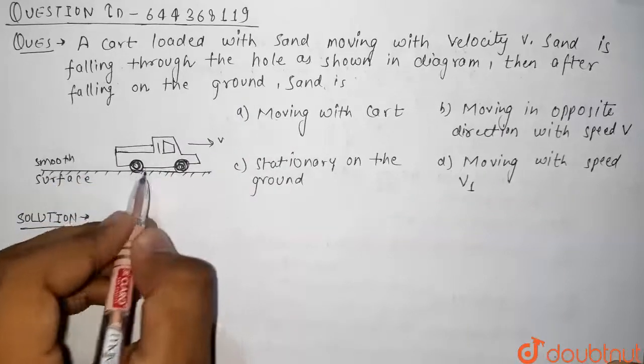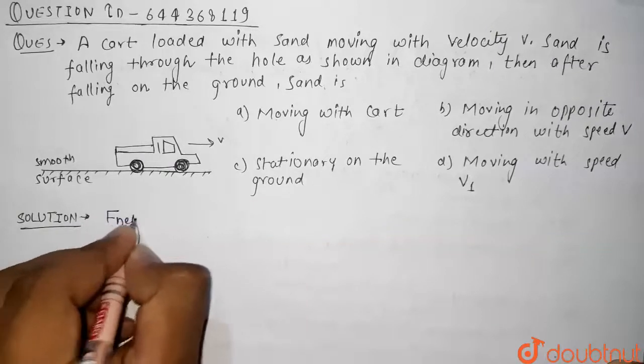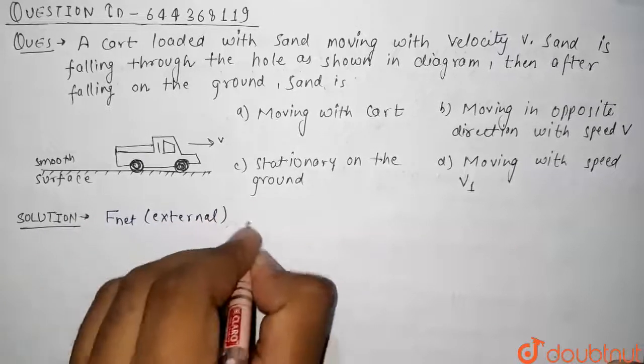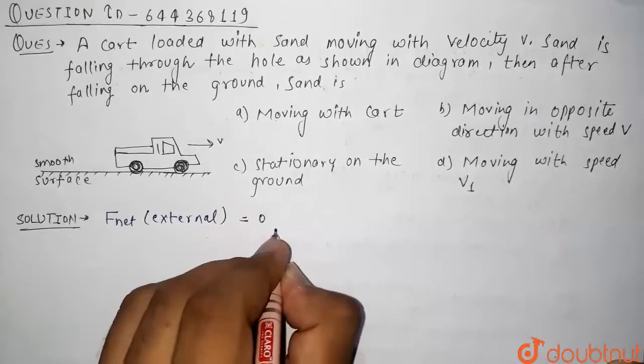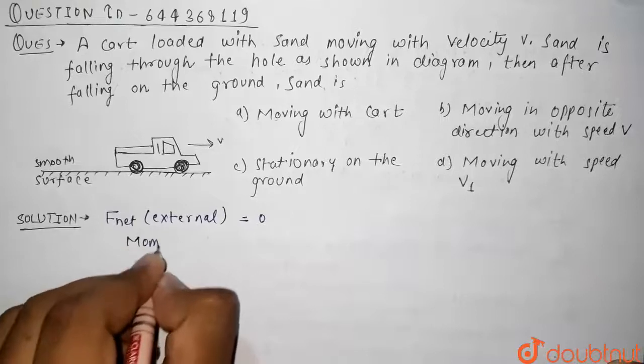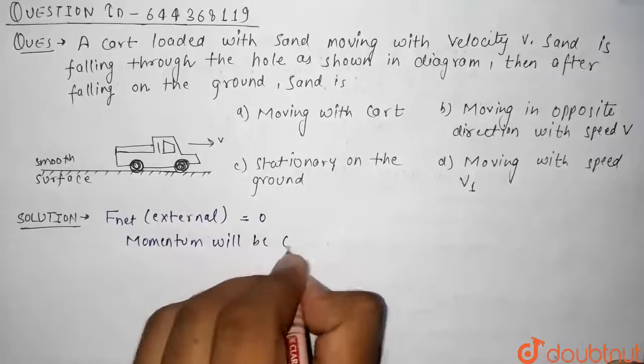From here we can clearly say that the net external force present on the cart plus sand system is equal to zero. So since F net external is equal to zero, we can say that momentum is conserved in this case.